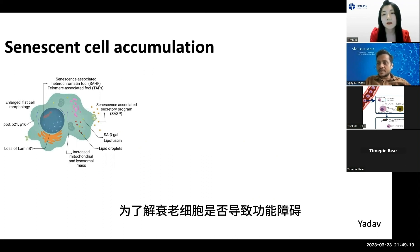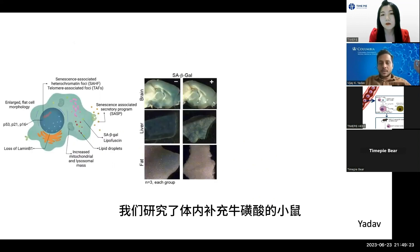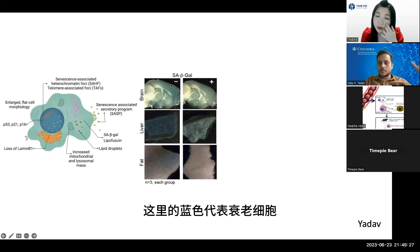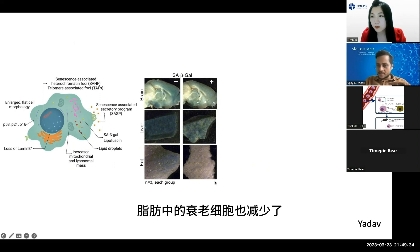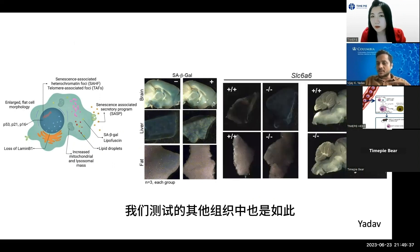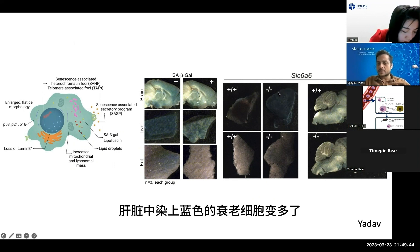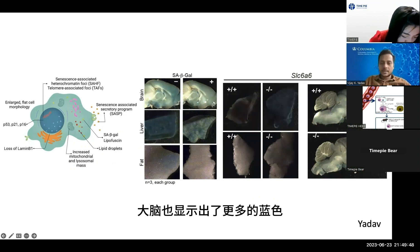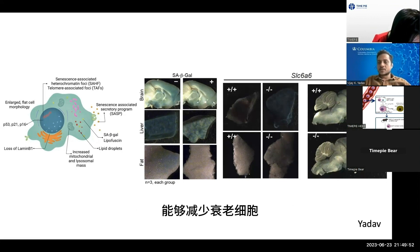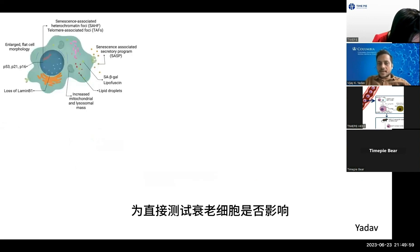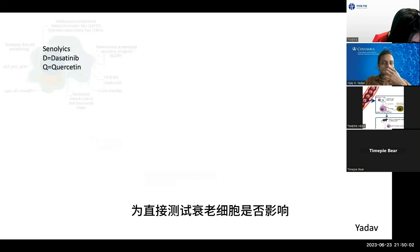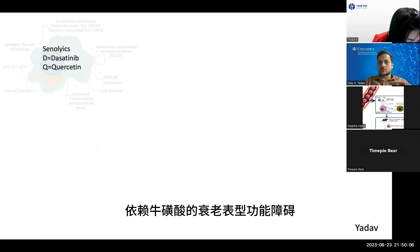To understand whether senescent cells were contributing to this dysfunction, we looked in vivo at taurine-supplemented mice. The blue staining represents senescent cells, and in the brain, liver, and fat, senescent cells were reduced. Conversely, in taurine transporter knockout mice with taurine deficiency, the liver, fat, and brain showed more blue staining — demonstrating that taurine supplementation reduces senescence while taurine deficiency accelerates senescence.